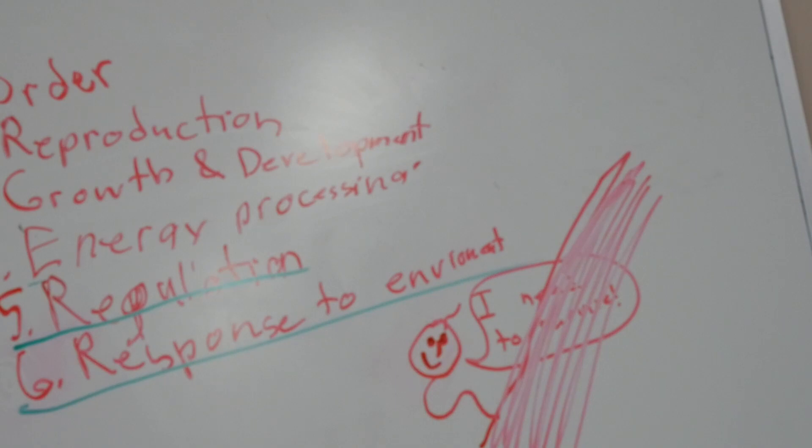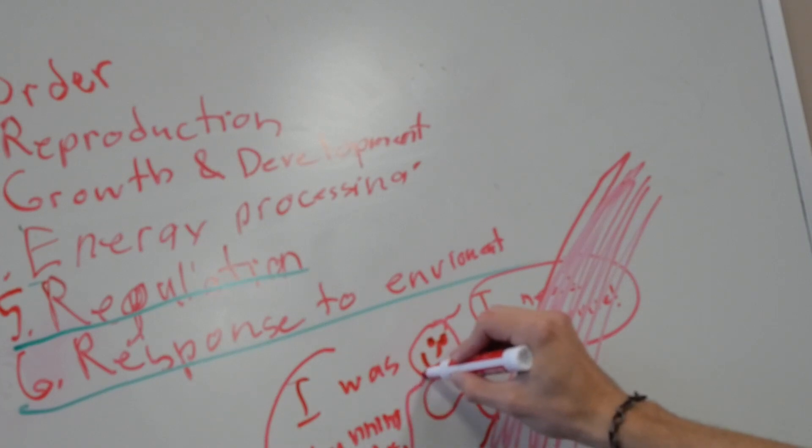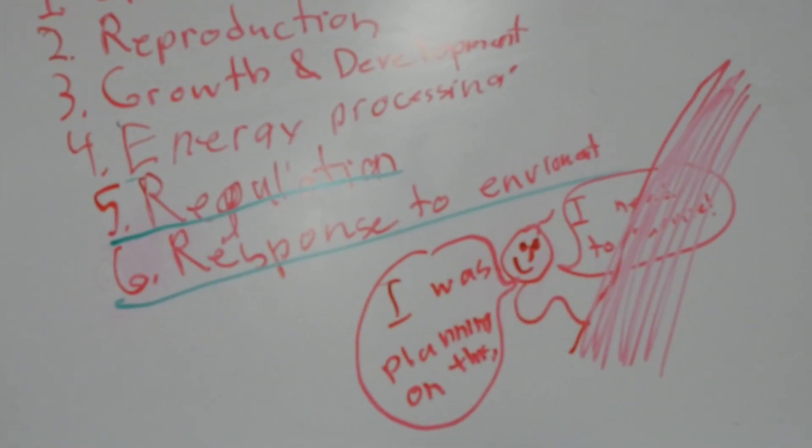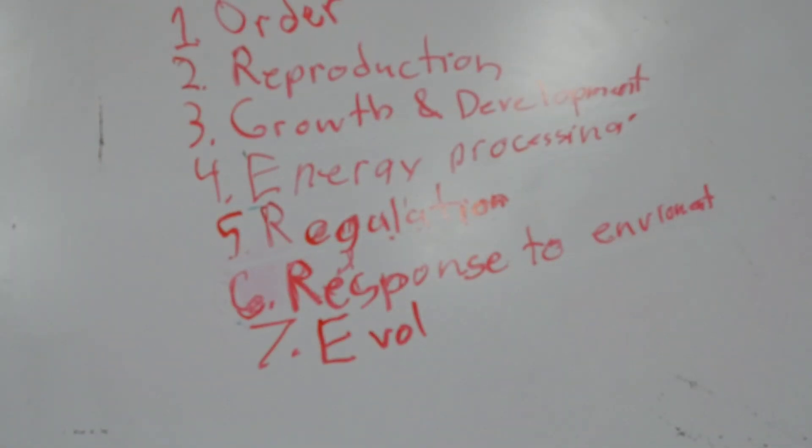This certainly demonstrates a response to the environment. The embryo wouldn't align itself if it didn't detect that it needed to. And every cell division that has taken place since fertilization has been anticipation for this moment. So from the very beginning, this new life form has been working to stabilize itself and survive. Regulation and response to the environment have been fulfilled.